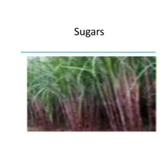Sugar! Foodstuffs that taste sweet contain different kinds of sugars. For example, ripe fruits like mango, banana, and chiku, as well as honey and milk, also contain various kinds of sugars. They too give us energy.